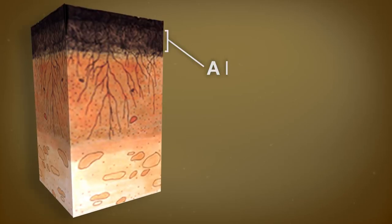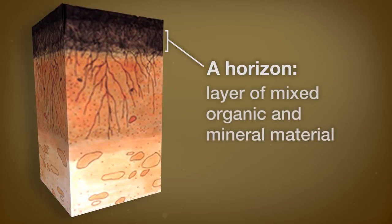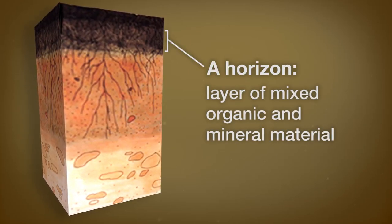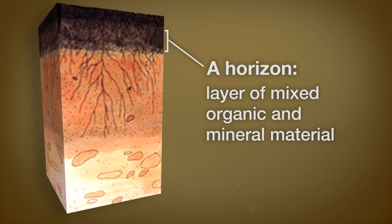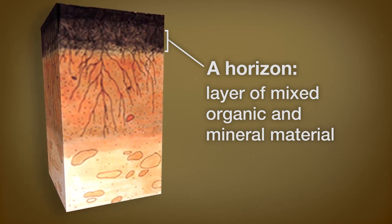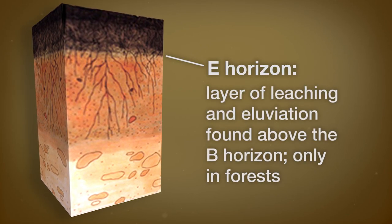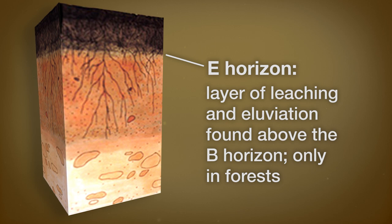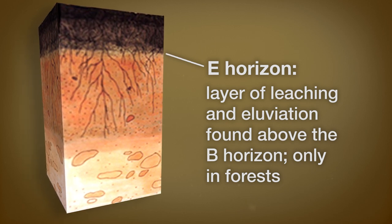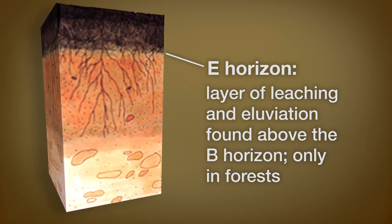The A horizon is present in soils that are naturally or artificially mixed. Also known as topsoil, the A horizon is a zone of organic material and mineral material that have been mixed together by earthworms, by a plow, or by some other means. The E horizon is a zone of leaching or illuviation that forms under the O horizon or less often under the A horizon. When present, it always appears above the B horizon and is only found in forests.